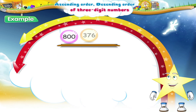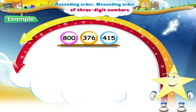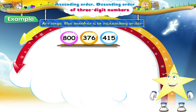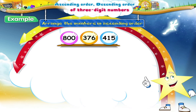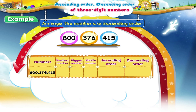Starry, look at these numbered balls. Arrange them in the ascending order of numbers. What happened, Starry? You seem to need some help. Okay, let's do it together. Here, the smallest number is 376 and the biggest number is 800. So the middle number is 415.